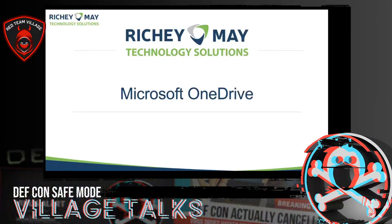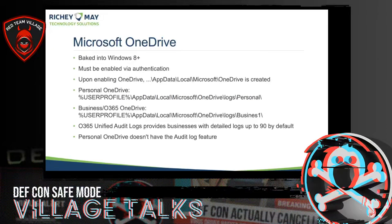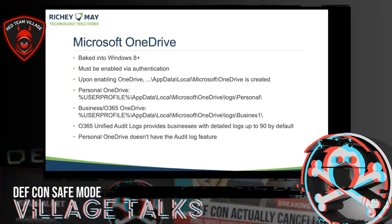Let's talk about Microsoft OneDrive first. It's baked into Windows 8 and above, but must be enabled via authentication. Once you sign in, it adds some registry keys and creates the OneDrive directory at AppData\Local\Microsoft. That directory will not be there until you authenticate. If you have a personal account, you'll see a personal folder directory within AppData\Local\Microsoft\OneDrive\logs. If they have a business version, you'll see business one — and you might also see business two, business three — but the primary account should be business one.